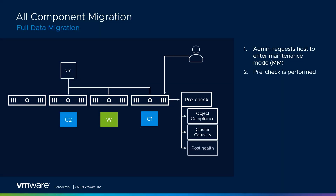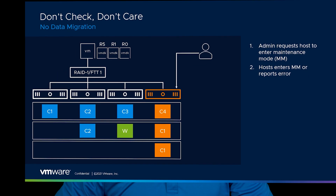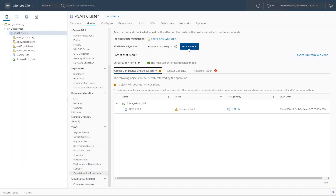Let's wrap up this video. We started with our full data migration option, where we copy all the data from one host to another, assuming we have more nodes than the minimum required. We then talked about ensure accessibility, which asks: can I take away this host and still have access to our objects? Our third option was no data migration, where the host goes into maintenance mode without any pre-checks. From there we jumped into vCenter, covered the data pre-check tool, and walked through how to put a host in maintenance mode. I hope you found this video informative, and thank you for watching.